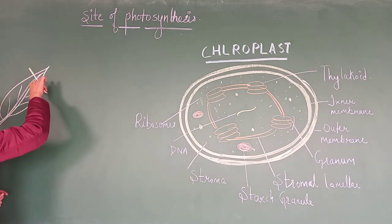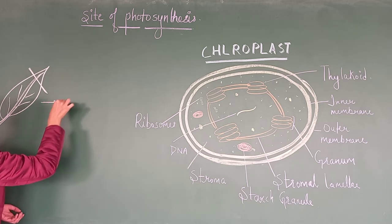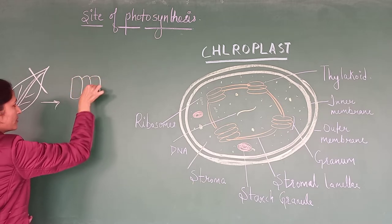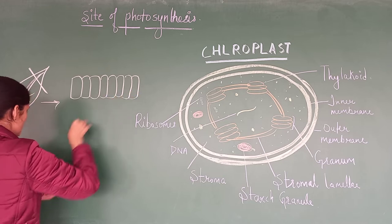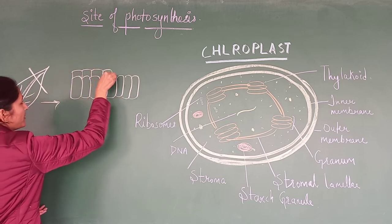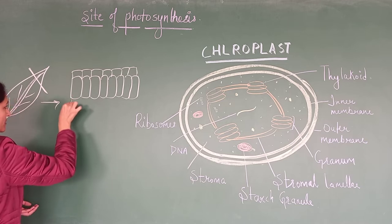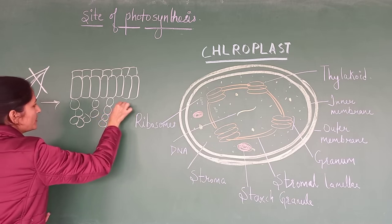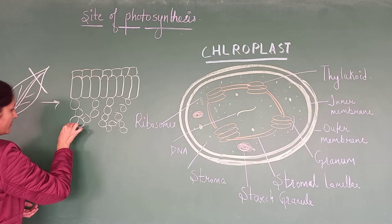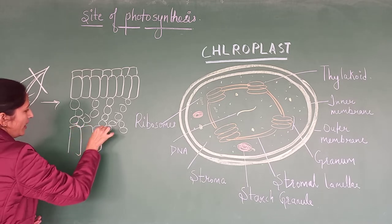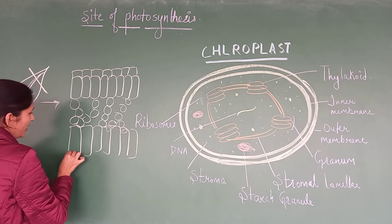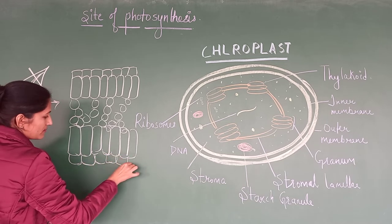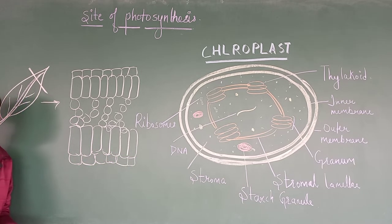If I am going to take the cross section of this leaf and observe it under the microscope, I am going to observe special types of cells arranged in it. These special types of cells are abundant in chloroplast. These loosely arranged cells are parenchymatous in nature, and these parenchymatous cells which are present as ground tissue in this leaf are termed as mesophyll cells.